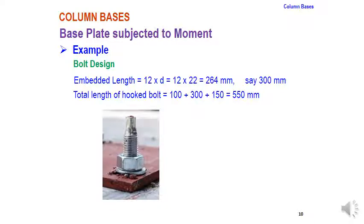The embedded length per specification is 12d = 12 × 22 = 300 mm. The total hook bolt length = 100 + 300 + 150 = 550 mm.